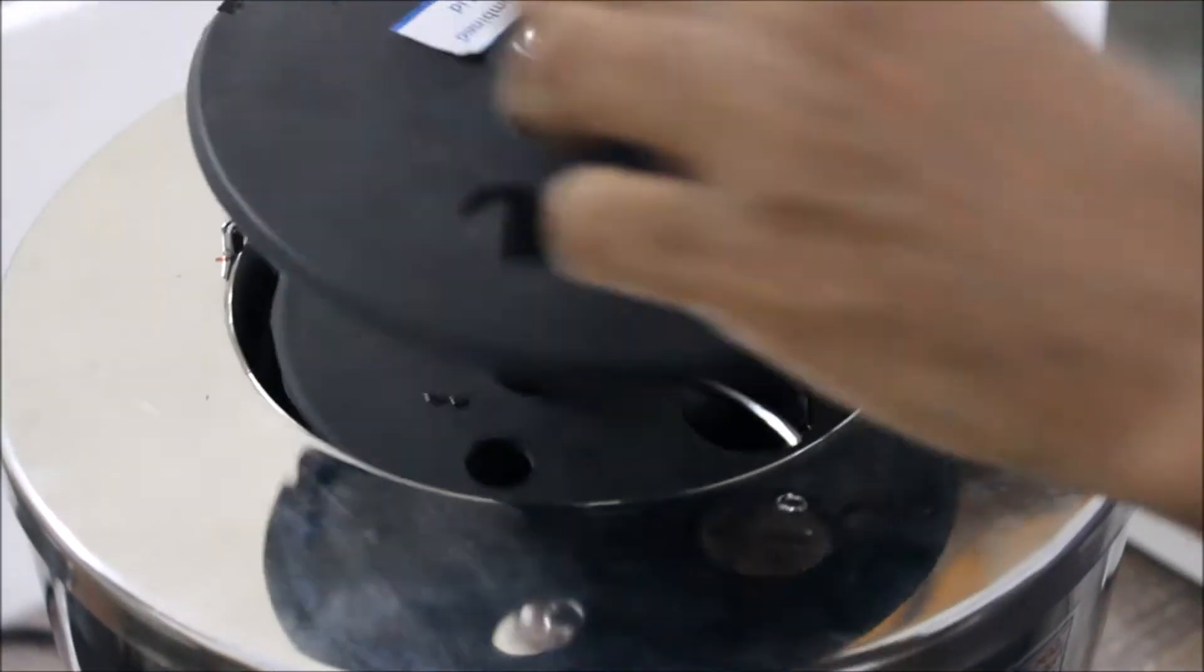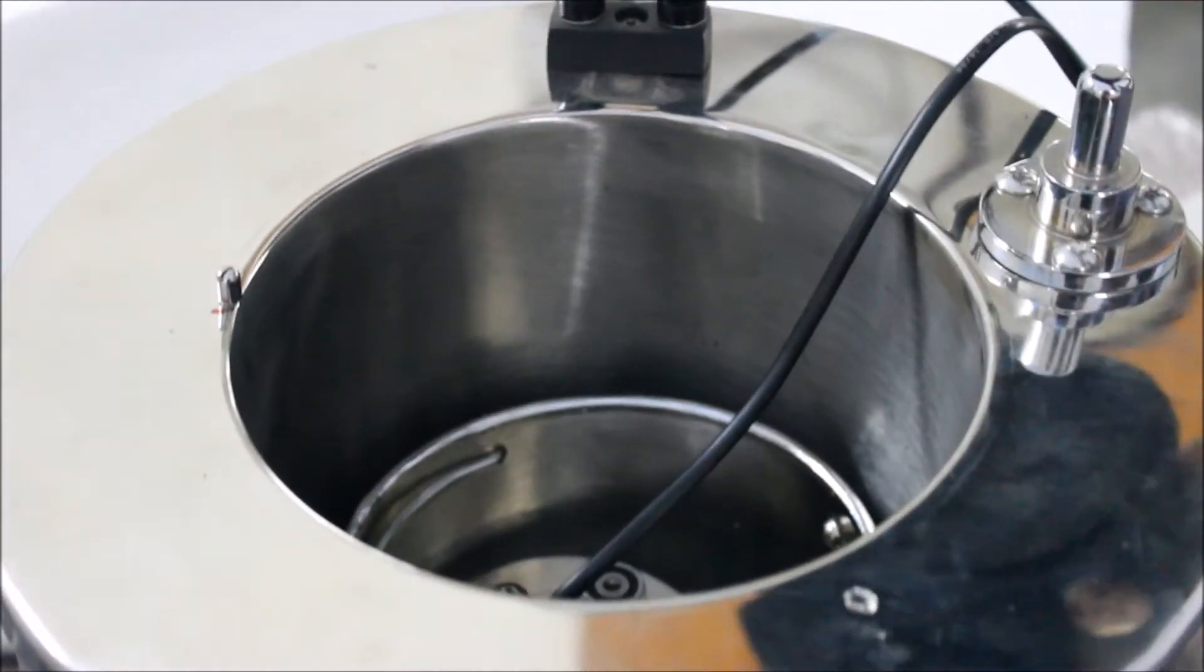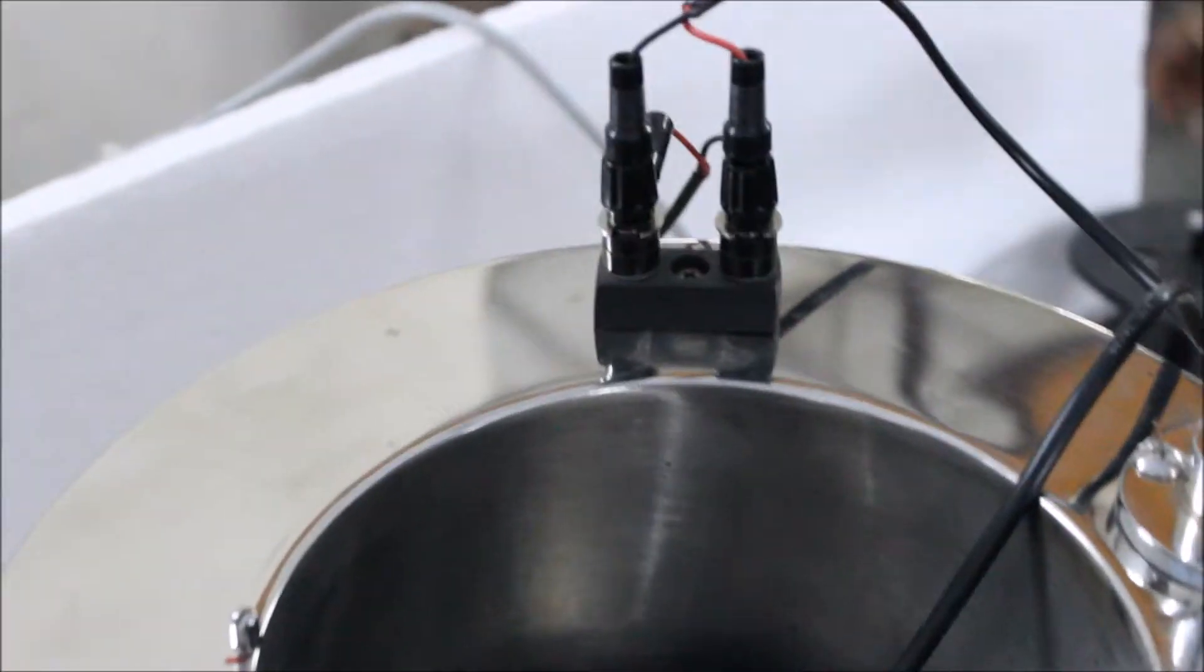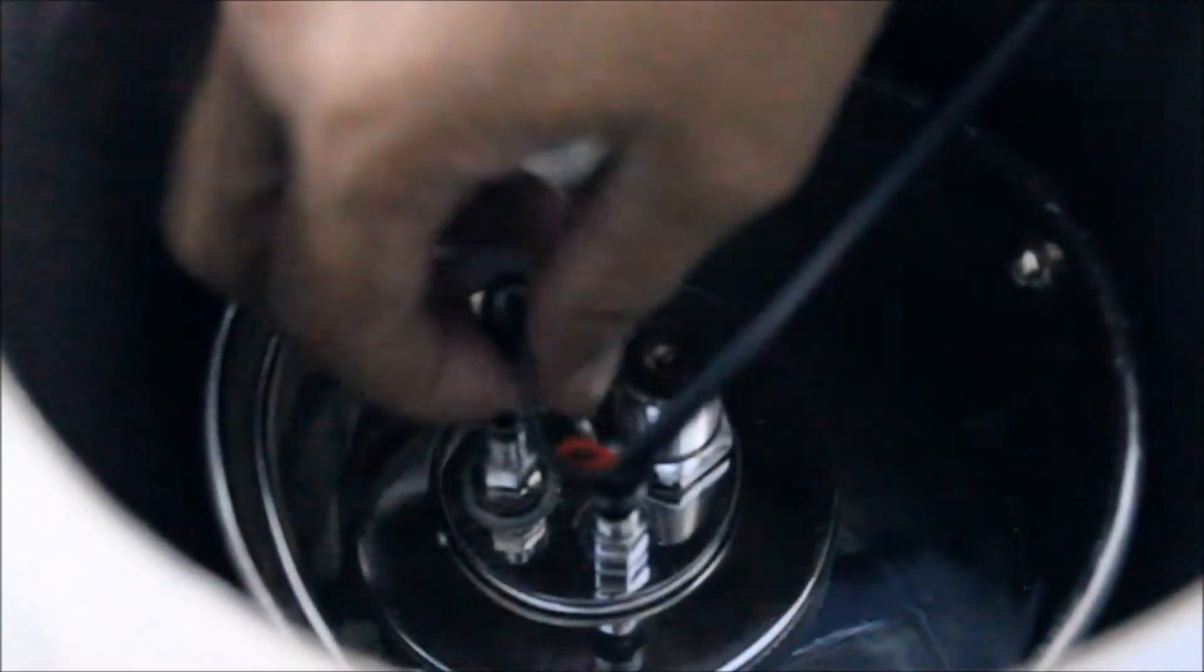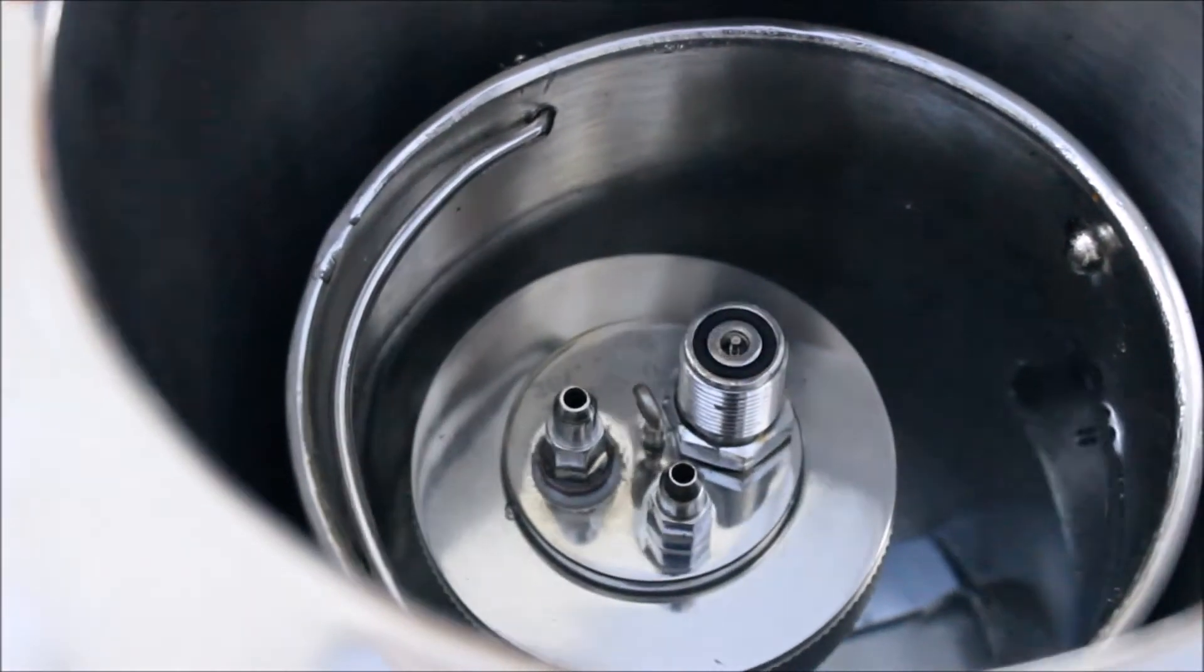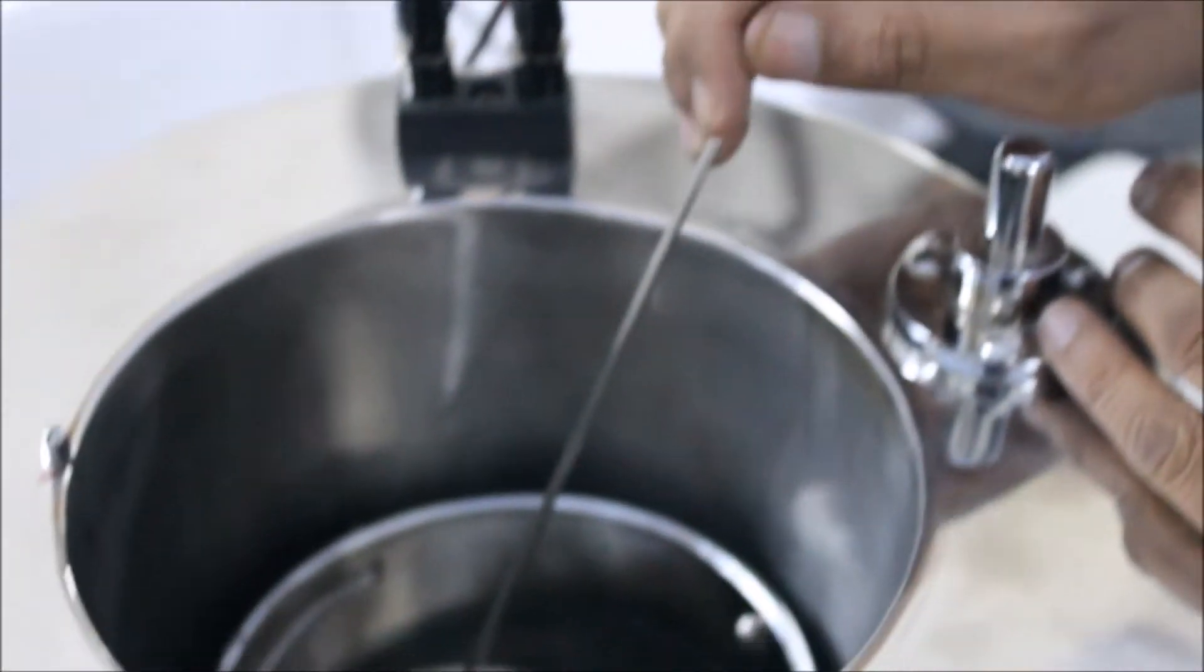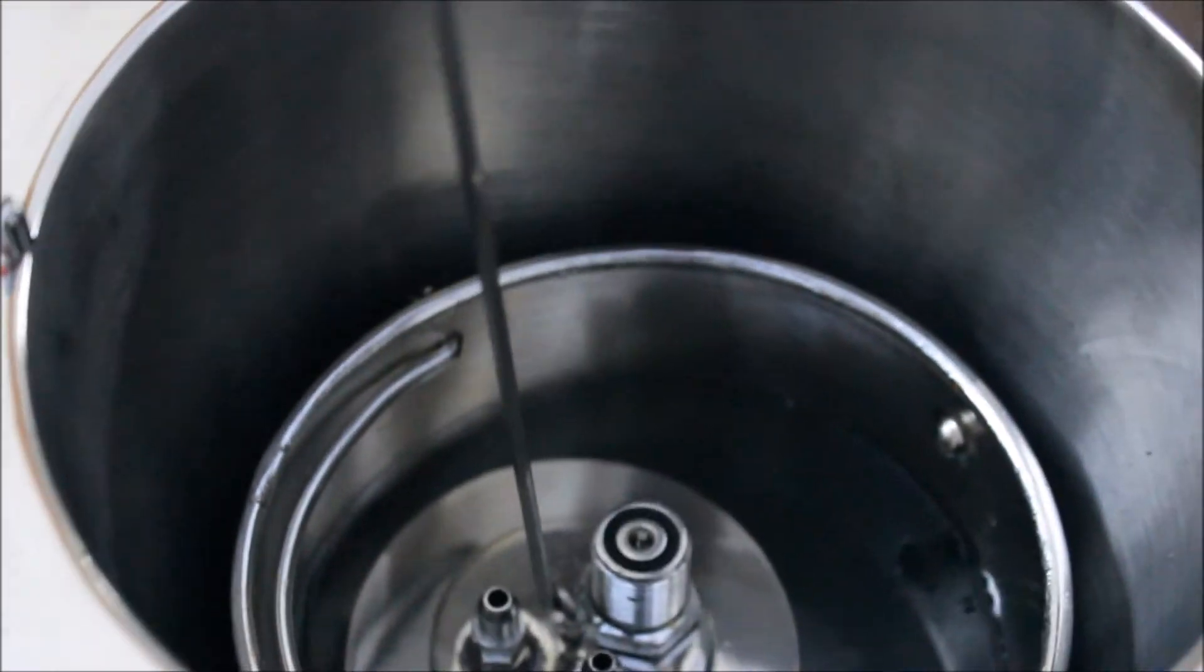Then we will open the combined lid and unplug the wires. We will use the lifting hook to lift up the combustion bomb.